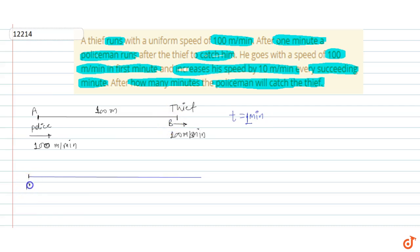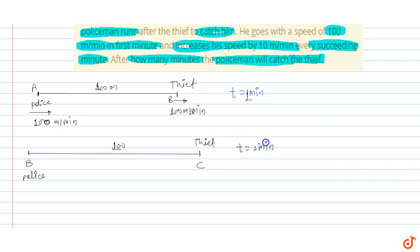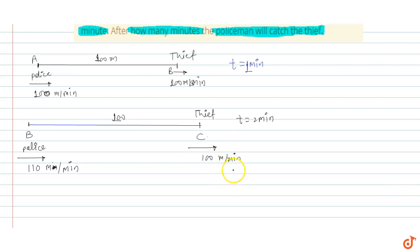Let's say point A और point B था। तो point B पे police आजाएगा — police एक मिनट में 100 meter दौड़ गया होगा। और thief 100 meter आगे चला गया होगा — उस point को C बोलते हैं। दो मिनट के बाद भी situation same है, distance constant रहेगी। इसकी speed हो जाएगी 110 meter per minute after first minute increase.